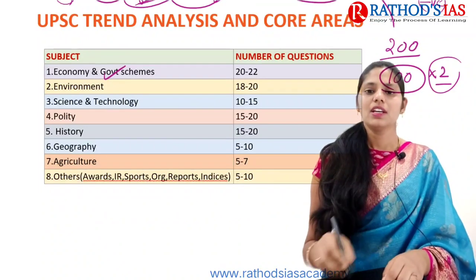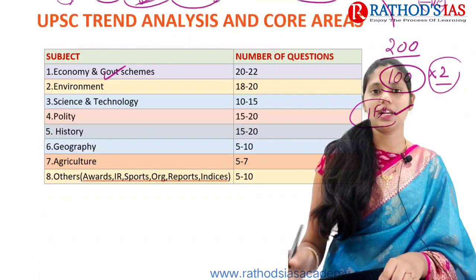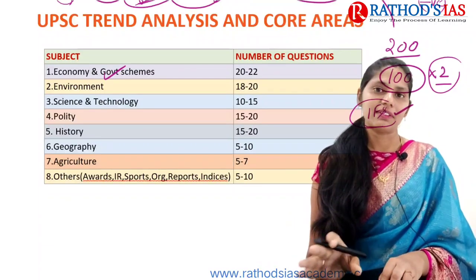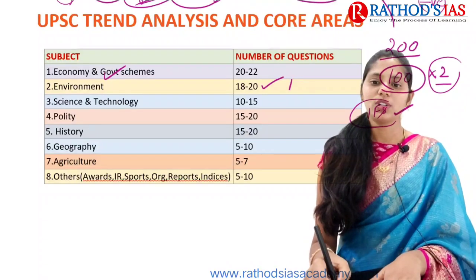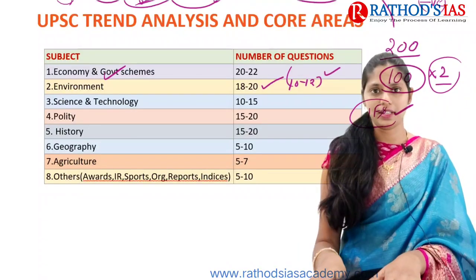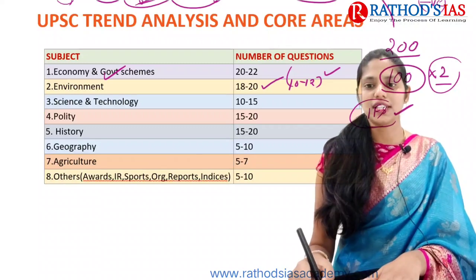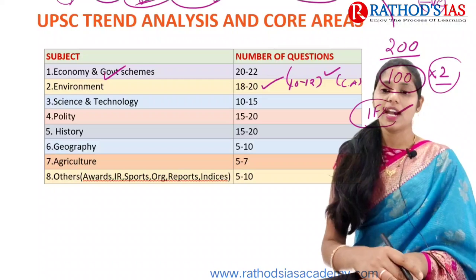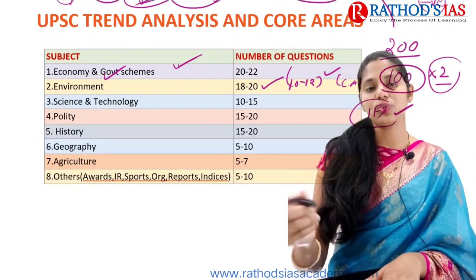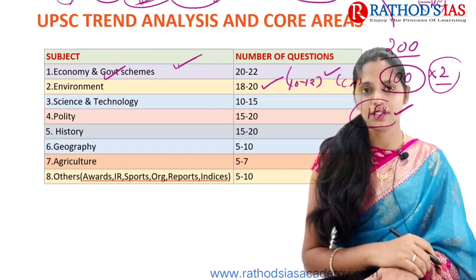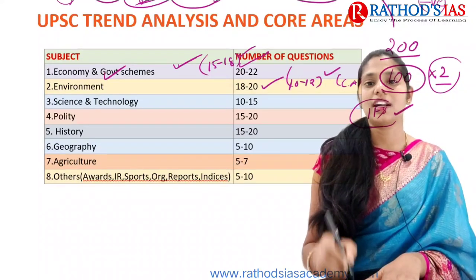The next priority is Environment. Because for IFS — Indian Forest Services — there is also a common prelims test along with IAS, IPS, and IRS, you will be getting more than 15 questions for sure from Environment — 15 to 20 questions every year. Around 10 to 12 questions will come from your static syllabus, which you can easily handle. Remaining questions come from current affairs like new species discoveries. But from Economy, out of 20 to 22 questions, if you know the basics and the static syllabus you can make at least 15 to 18 questions correct.